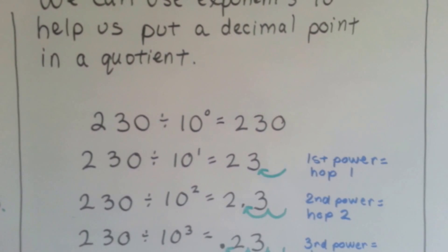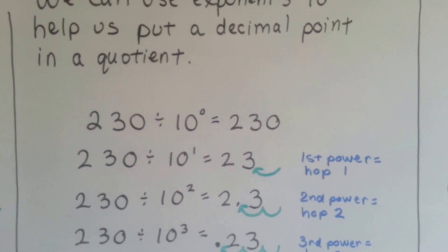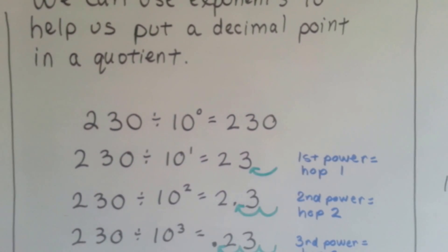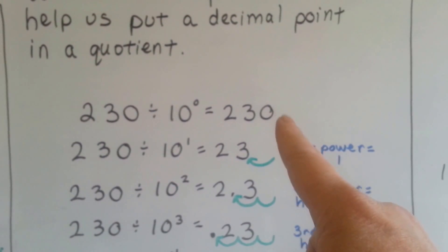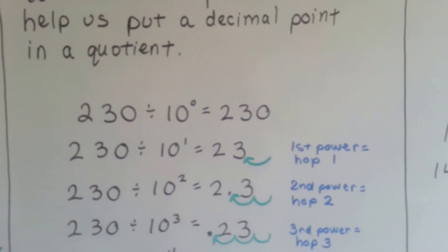230 divided by 10 to the first power is 23. First power means we're going to hop once. The decimal point is going to go from over here behind the 230 to now it's behind the 3.